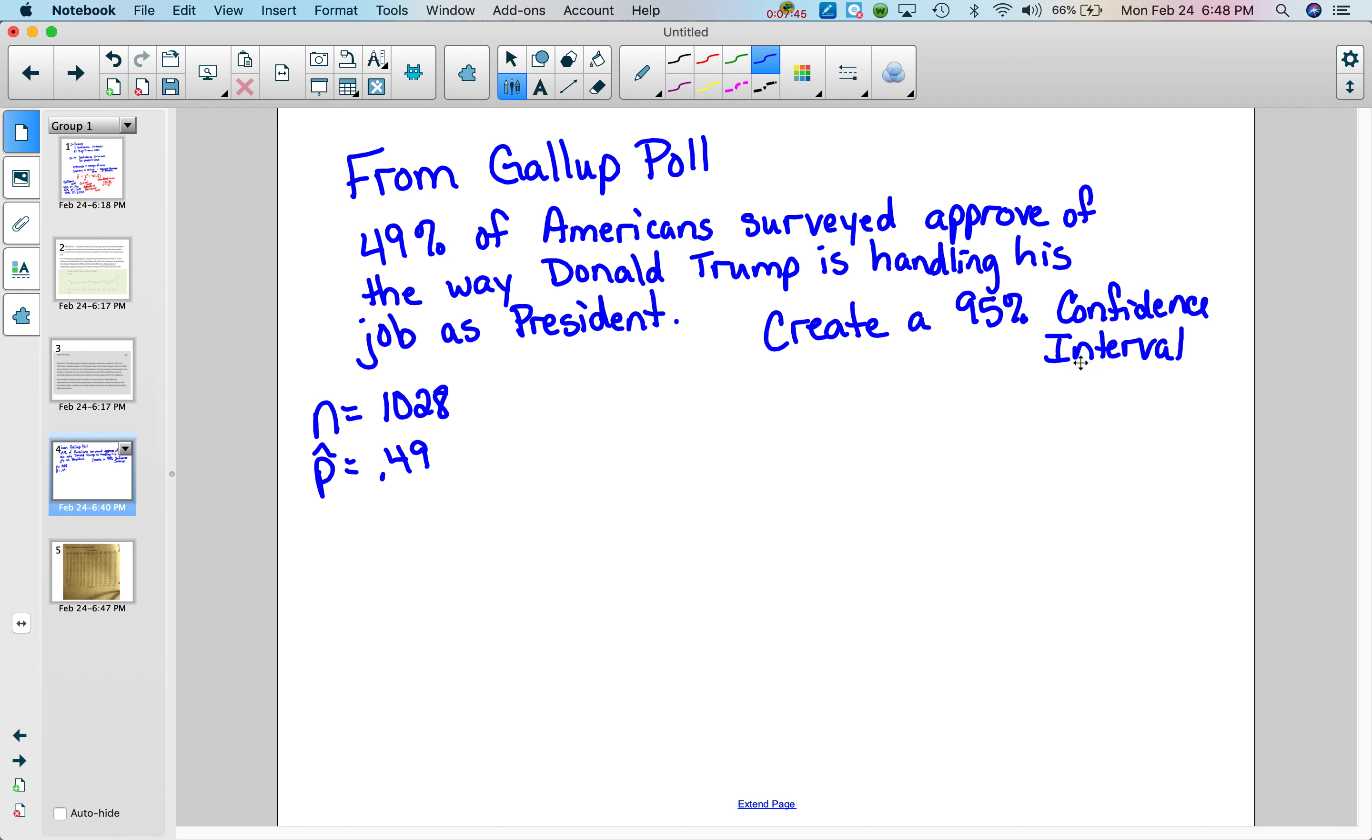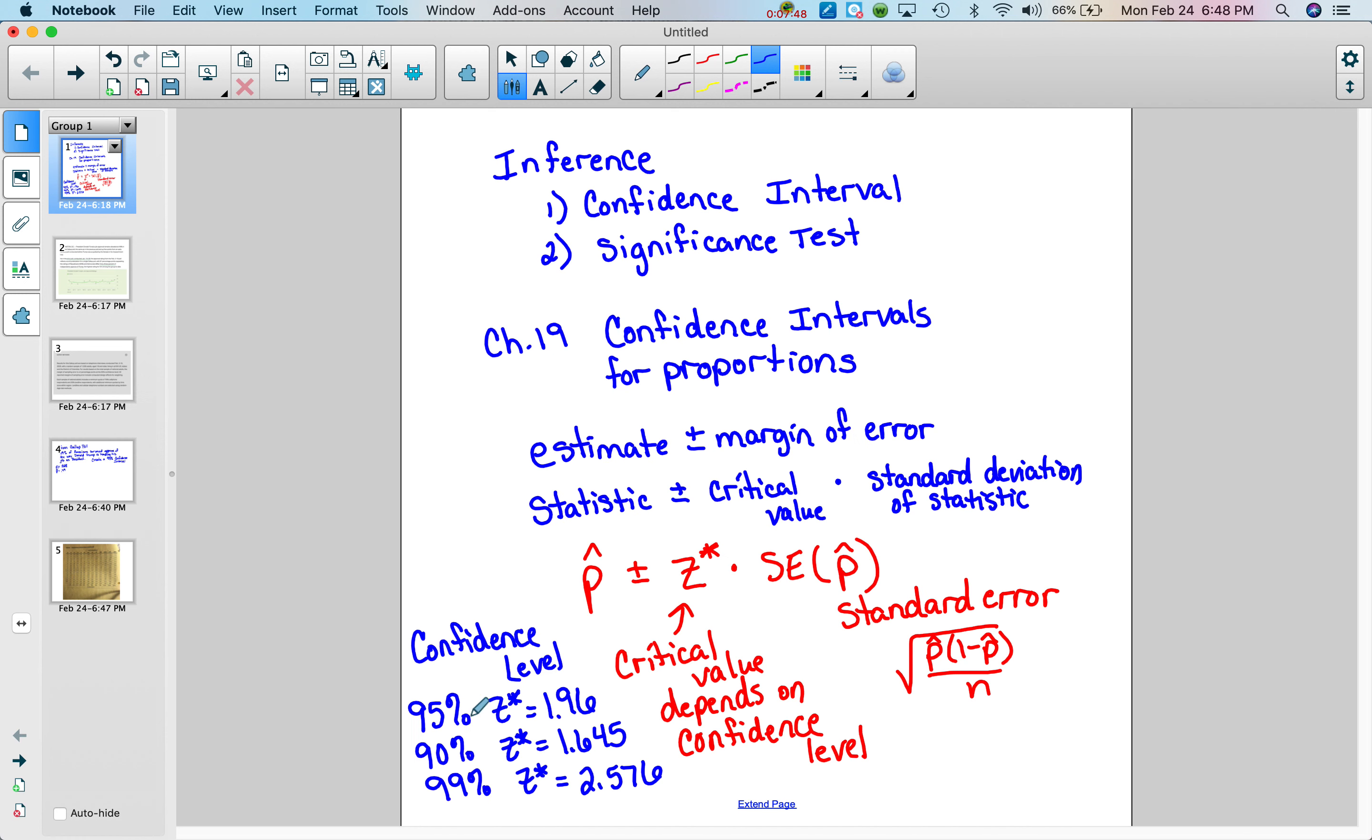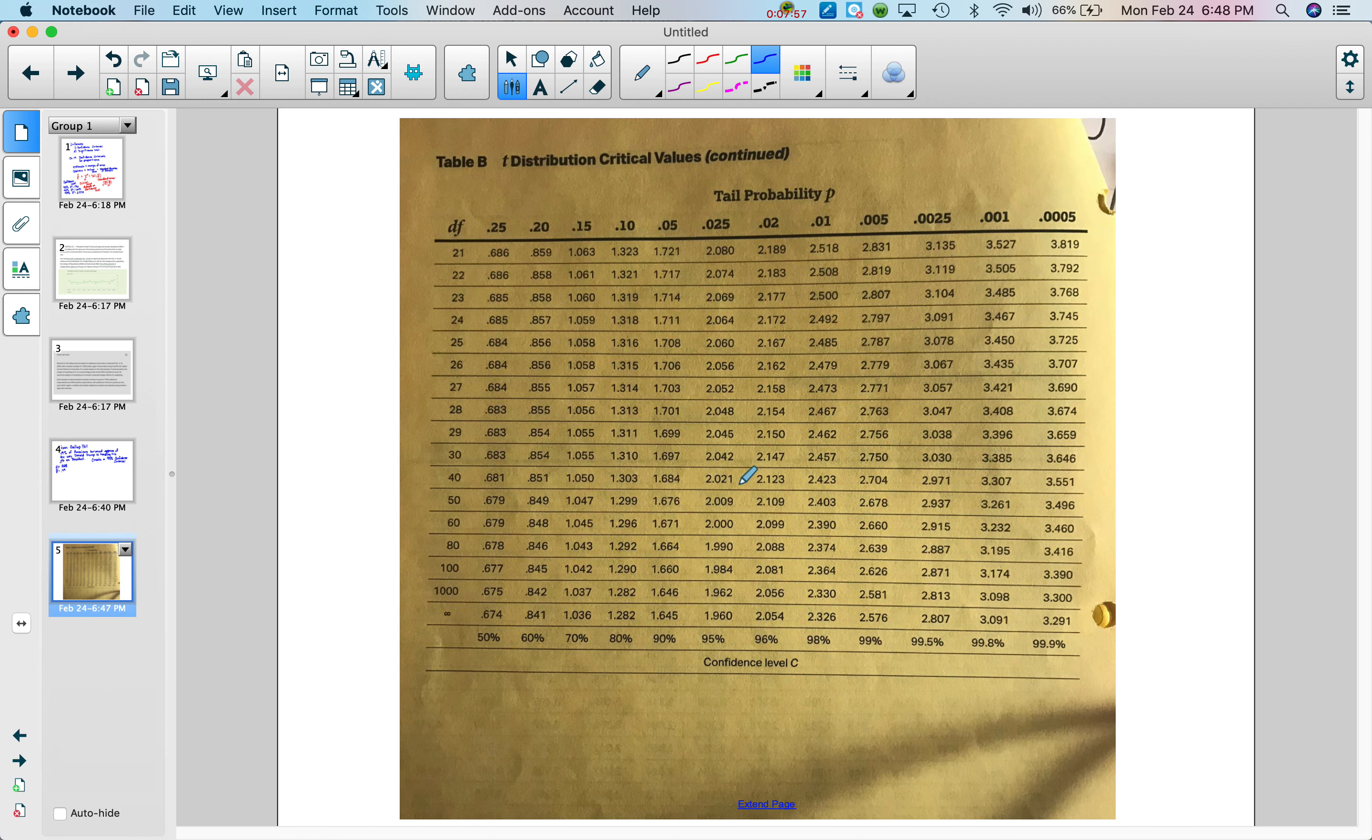So for the 95% confidence interval, I had given you some values for the z star. 95% is 1.96, but I want to show you where you can find those. This is on one of your tables on your yellow packet, Table B, the second page. If you look down at the very last row, you will see some values. It says confidence level C. Notice right here for 95%, look at the number right above it. For a 95% confidence level, we have 1.96, and that's our z star value. If it was 99%, you'll see it's 2.576. And 90% was 1.645. So that's where you can find those values.